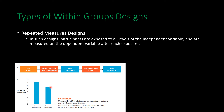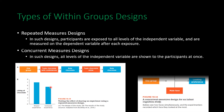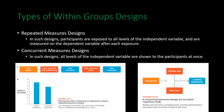Results showed that when participants ate the chocolate together, they rated it as more tasty than when they ate it by themselves. Another type of within groups design is concurrent measures design, used quite a bit with infants, where both levels of the independent variable are shown simultaneously. For example, to examine whether infants prefer to gaze at men or women, a female and a male face are shown on a computer screen simultaneously, and researchers measure which one the infant fixates on for longer — both levels are presented at the same time.